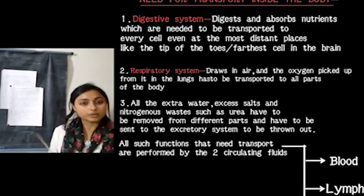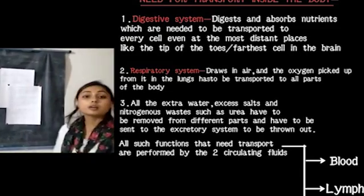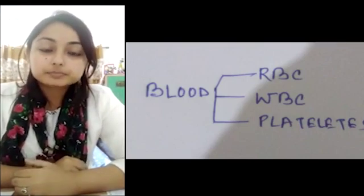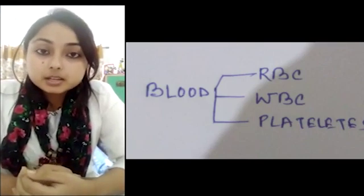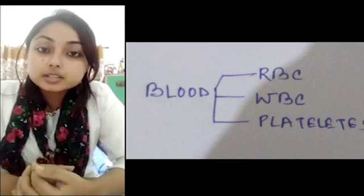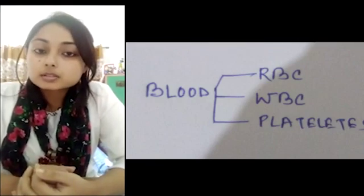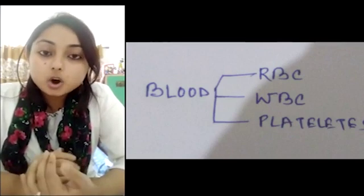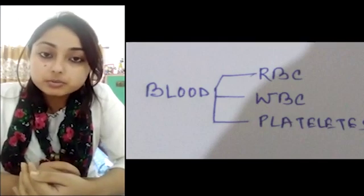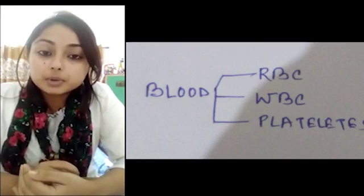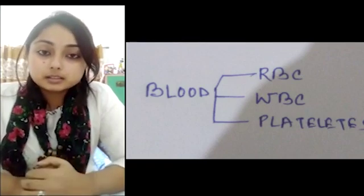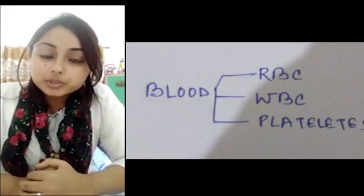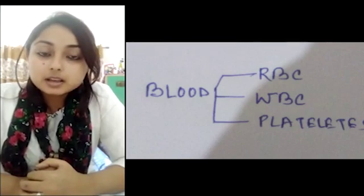Now we are going to learn what blood is. As per the definition, blood is a fluid connective tissue. It is fluid because it flows throughout our system. It is connective because it connects all parts of our body. When we say tissue, that means blood is composed of various cells, which include RBC or red blood cells, WBC or white blood cells, and platelets.